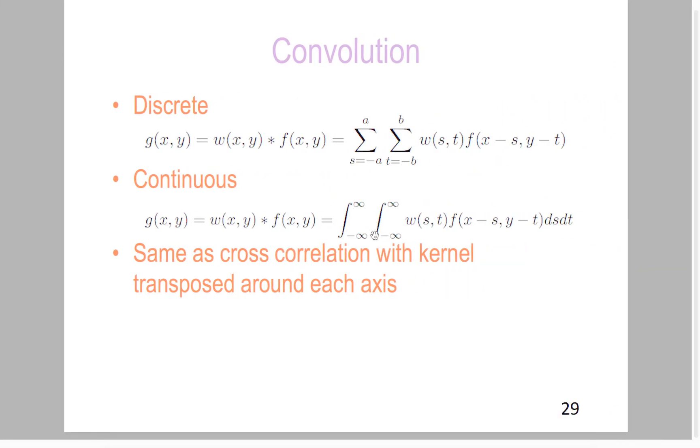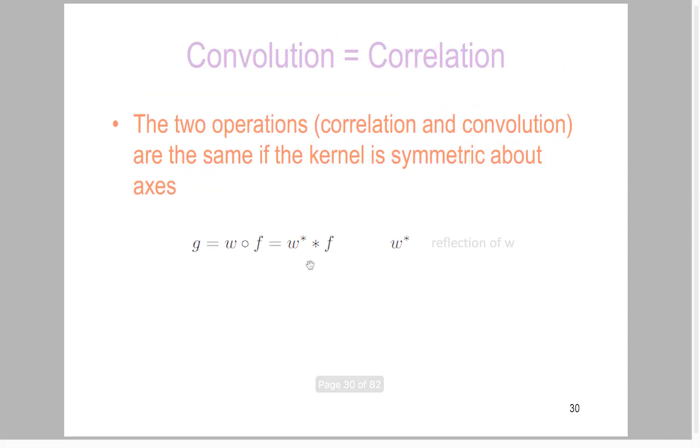So let's go down to, both of these are actually, they have two important properties. Number one is what I talked about before, if the kernel is the same when you rotate it 180 degrees, it doesn't make a difference. So they're actually both going to be equal if the kernel is symmetric about both axes, which was like what we saw in our case here.